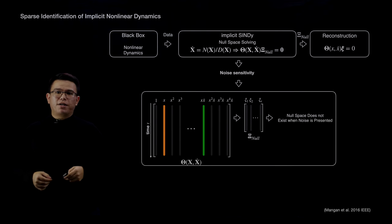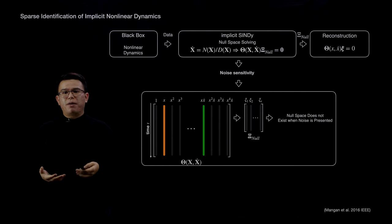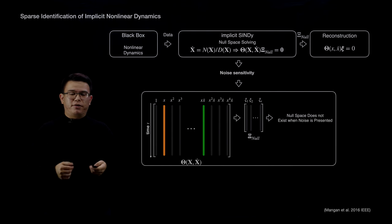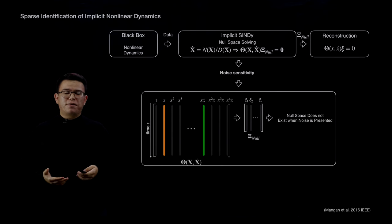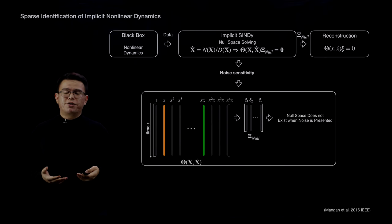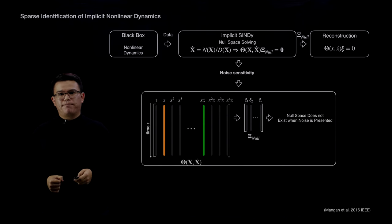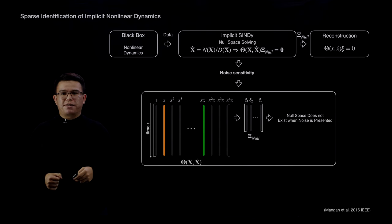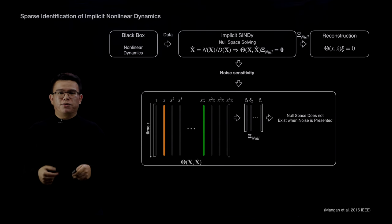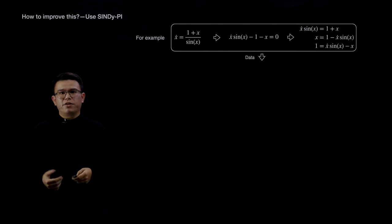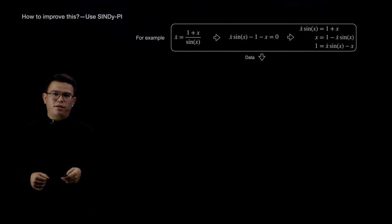Implicit CINDY also has one drawback: it is noise sensitive. We have to solve for the null space of a library matrix, but the null space does not exist when the matrix is full rank, which is always the case when measurement data is contaminated by noise. To fix this, a post-processing step is needed, but this post-processing is also noise sensitive. So the question is, how can we improve this? The answer is CINDY-PI.